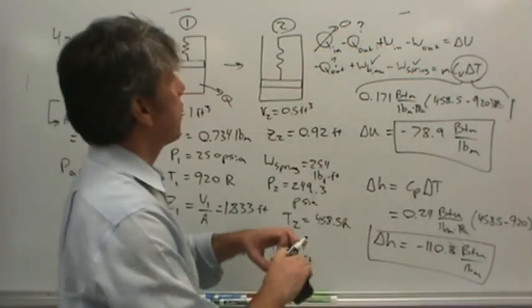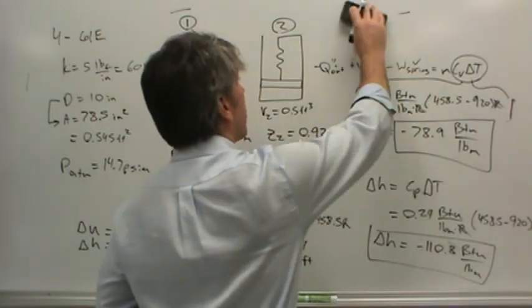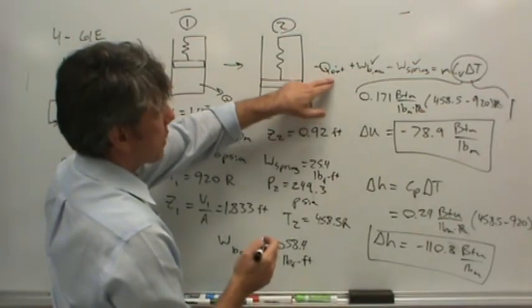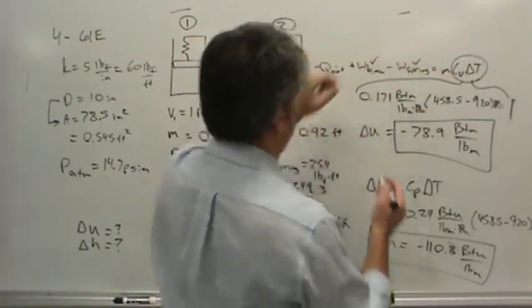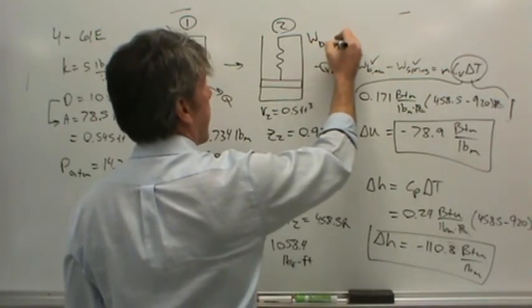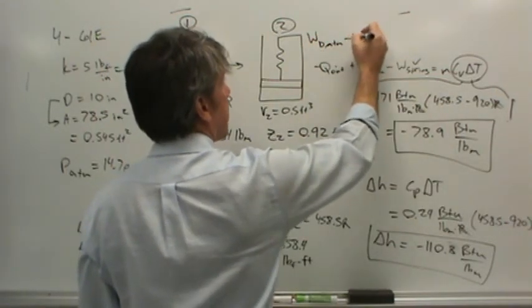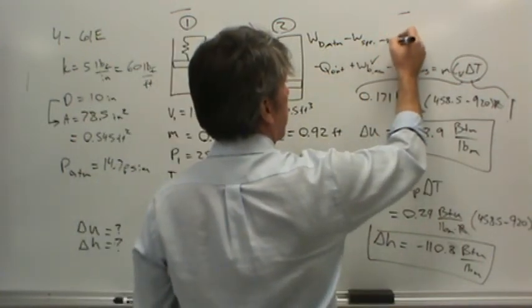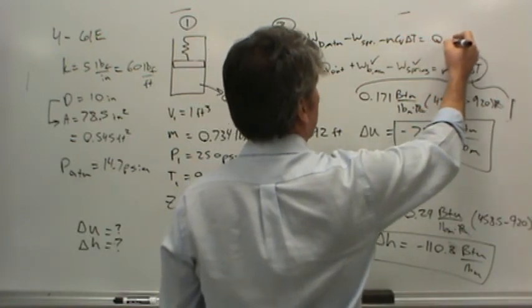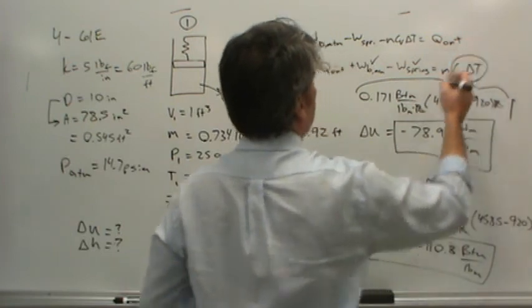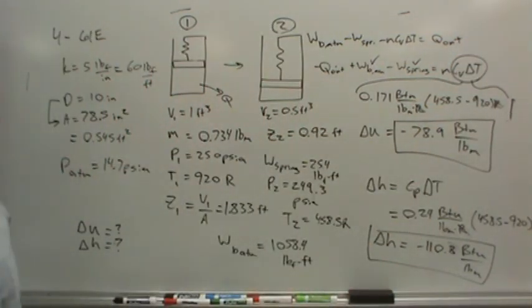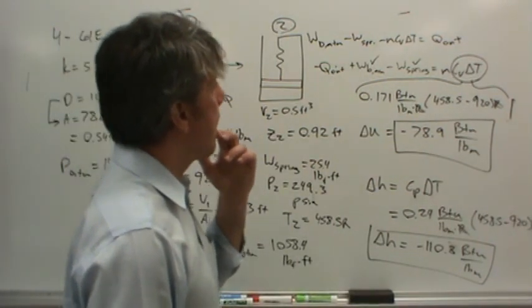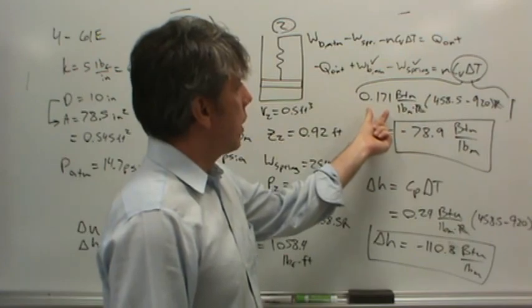Now let's find out Q out. I'll solve for Q out from the energy balance. Boundary work from the atmosphere minus spring work minus MCV delta T equals Q out. Wait, your delta U - did you not multiply by mass? It needs to be negative 57.9.